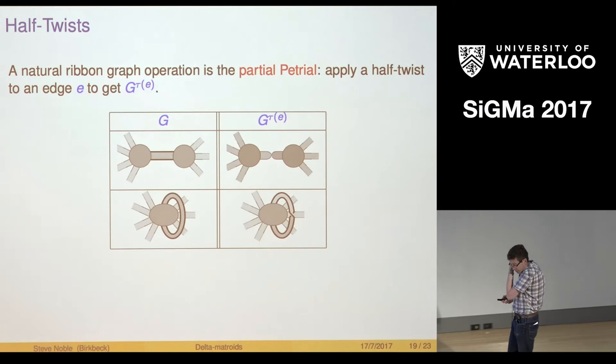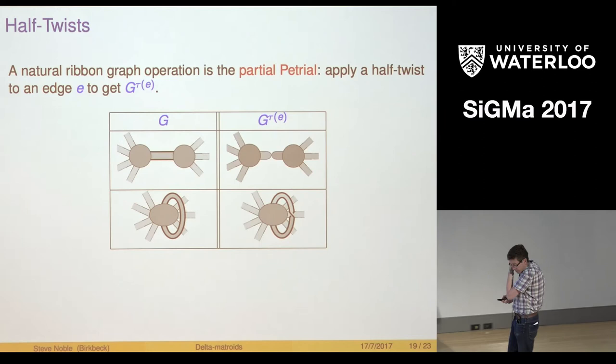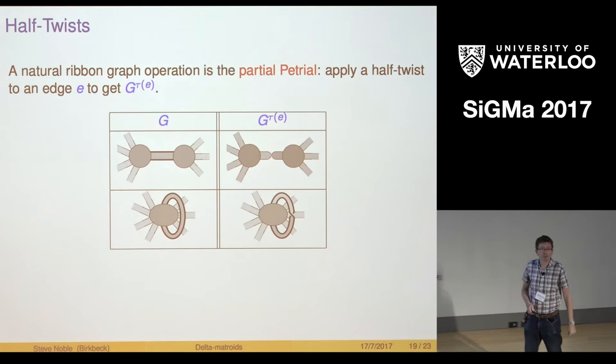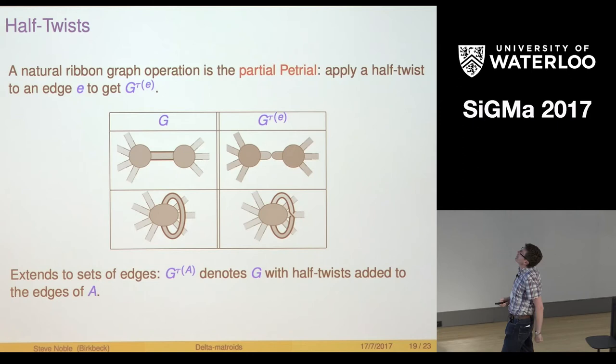The last thing I want to talk about is another operation that you can do on a ribbon graph. A simple thing you could do with a ribbon graph is just put a twist, a half twist in an edge. You could put half twist in an arbitrary set of edges. Let's keep that in mind for a minute but do something different.